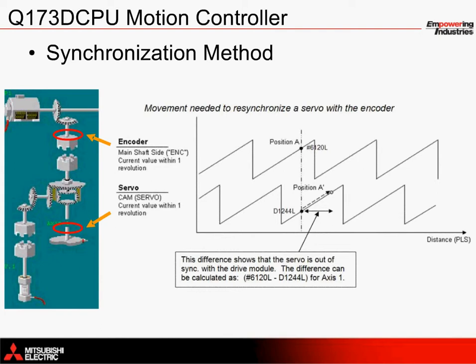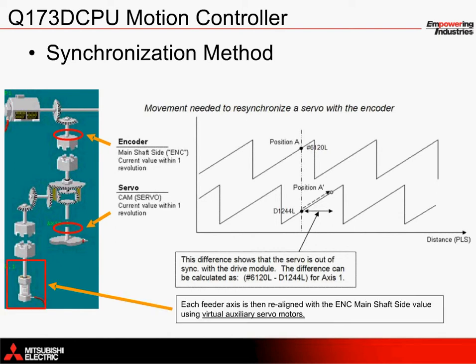While the master encoder is not moving and the main clutch is open, an auxiliary virtual servo motor — shown on the bottom left — is used to realign the servo. This routine is applied whenever one or more axes become misaligned and are commanded to move based on a start operation from the operator on the GOT.